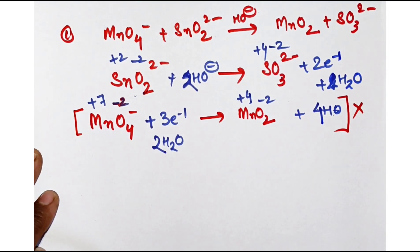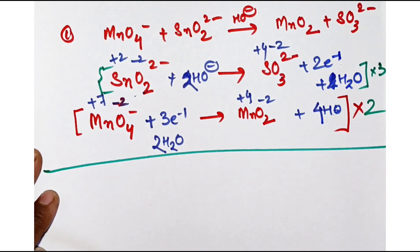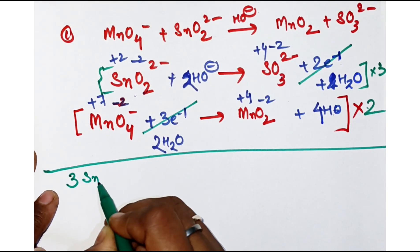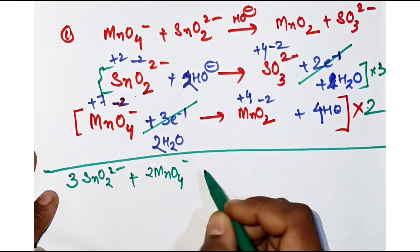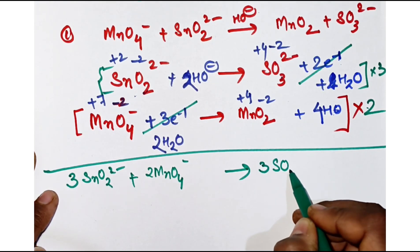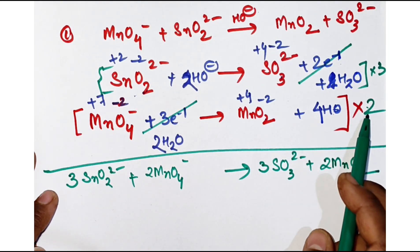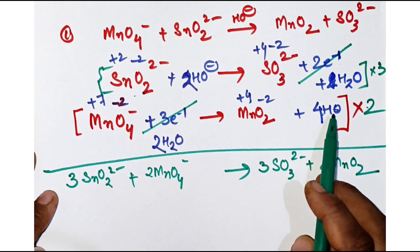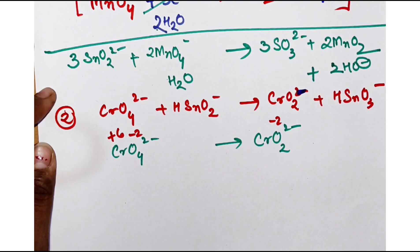Now multiply this equation by three and the other by two, to balance the charge — six electrons on each side cancel. Write the equation: 3SnO₂²⁻ plus 2MnO₄⁻. On the right-hand side there will be two more hydroxyl ions and one molecule of water on the left. So this equation is done.